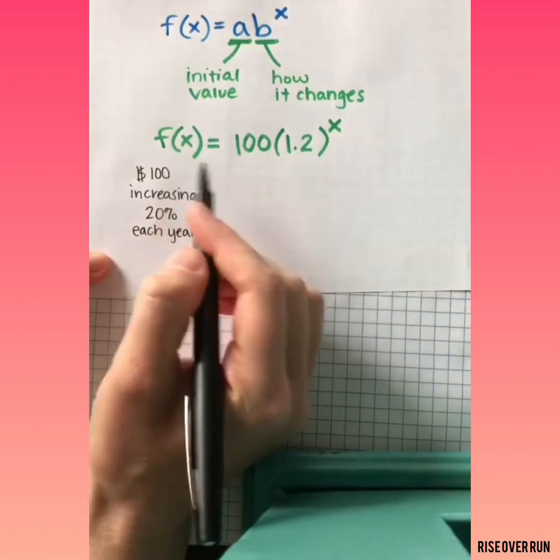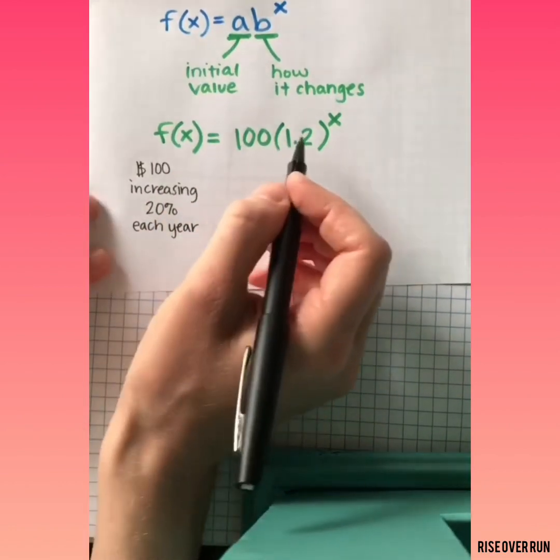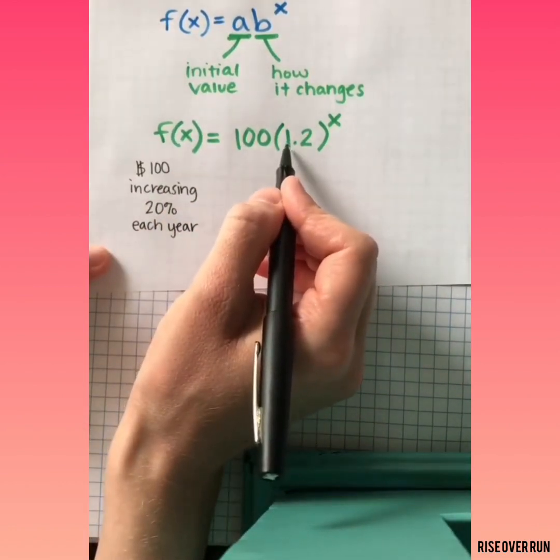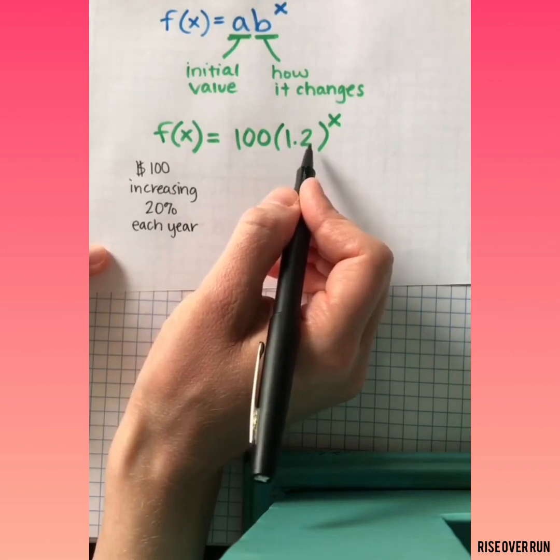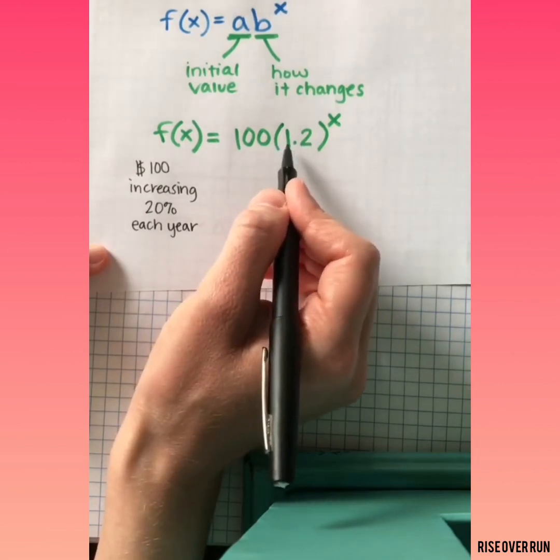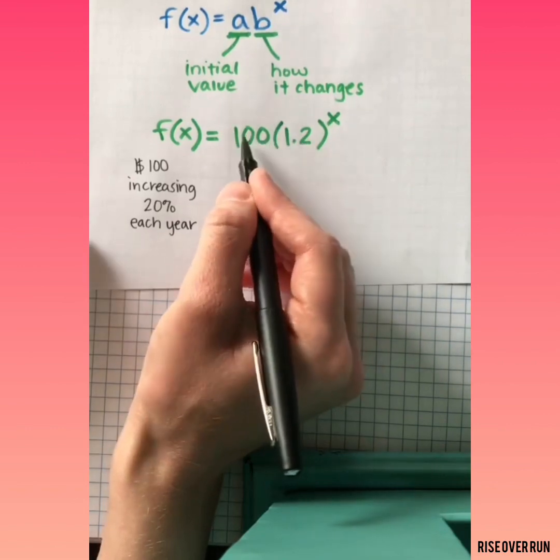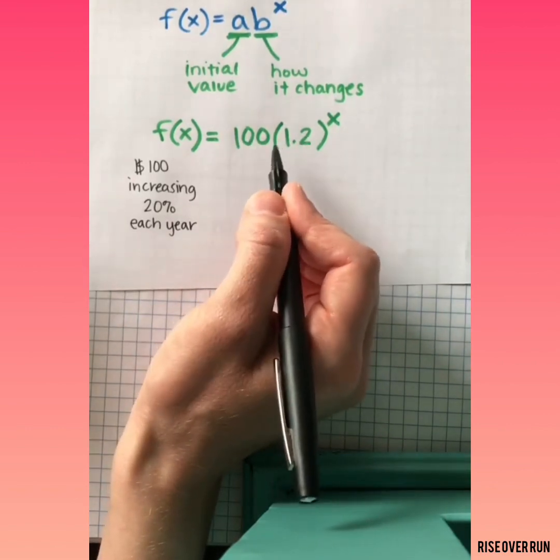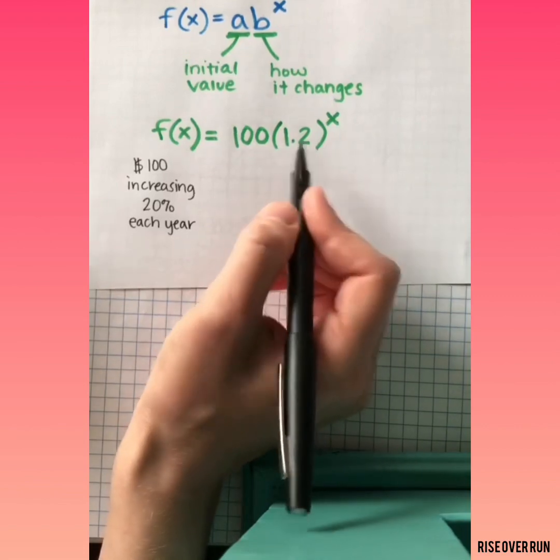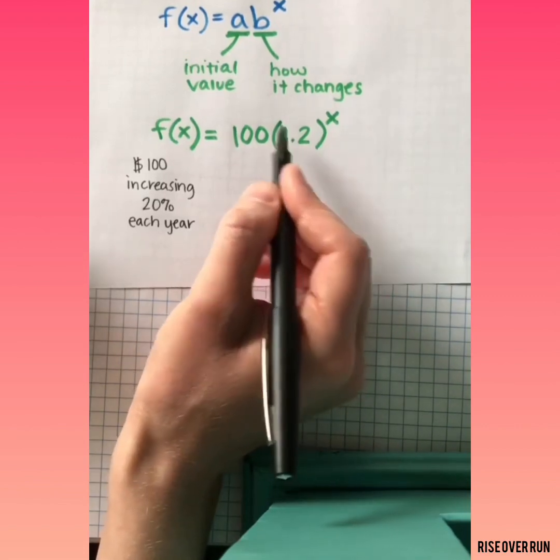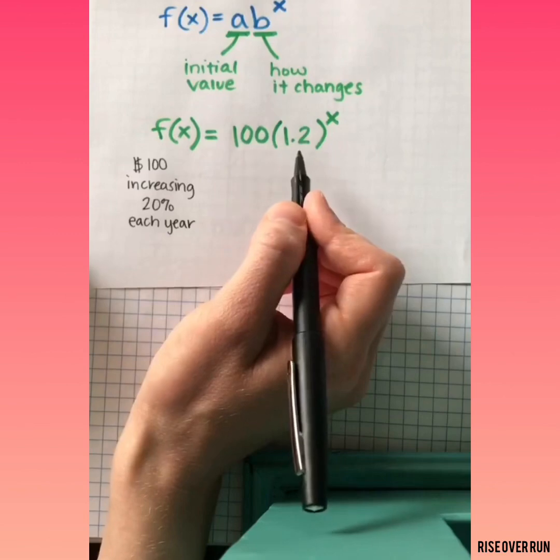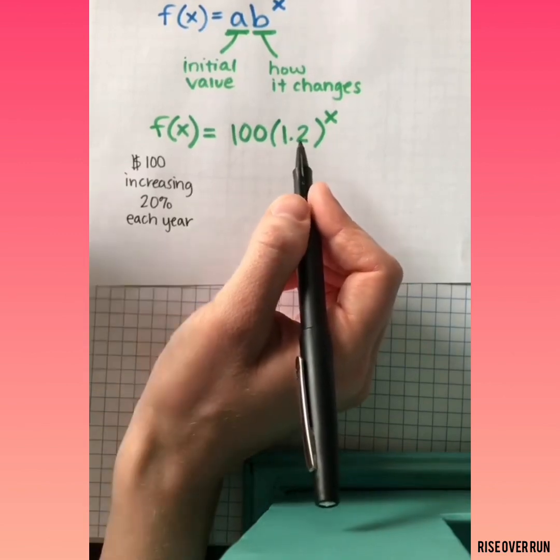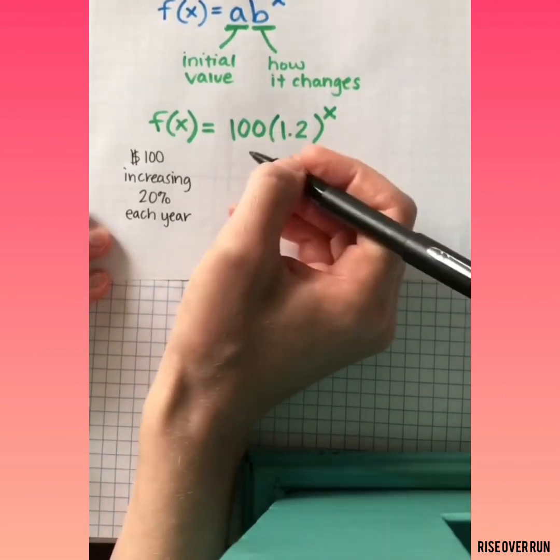Let's see how this exponential function would work. Now, first of all, why do we have a 1 instead of just 20%? We need that 1 there so that you don't lose money. If we just multiply 100 by 20% or .2, it would show that you only have $20. We put the 1 here so we'll get a value of $120. That would represent what you still have, the 100, plus the increase every year.